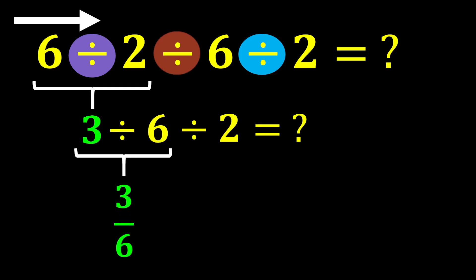Then, 3 divided by 6 gives us 3 over 6. Since 3 divided by 3 equals 1, and 6 divided by 3 equals 2, 3 over 6 simplifies to 1 over 2. Finally, we calculate 1 over 2 divided by 2.